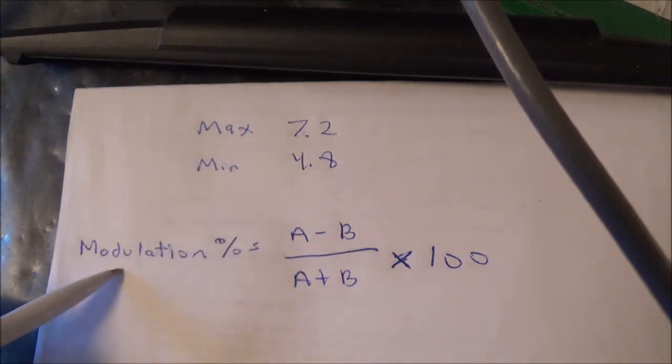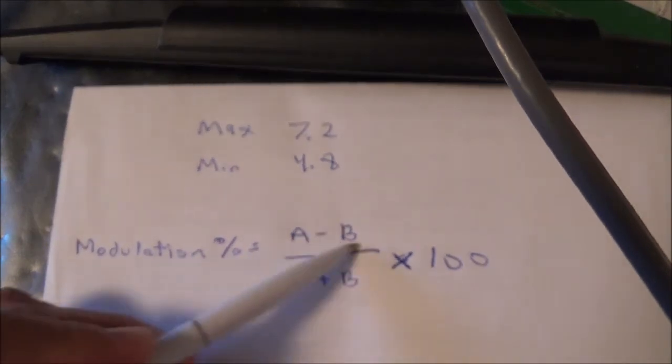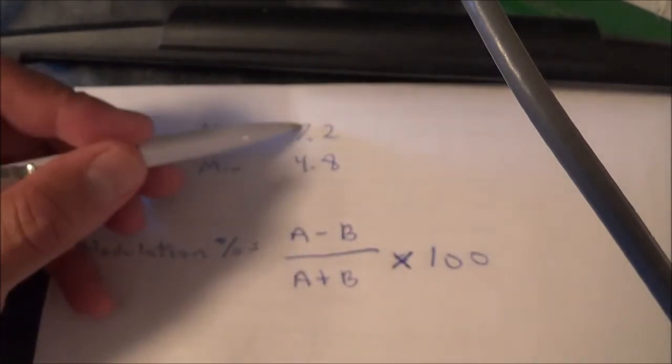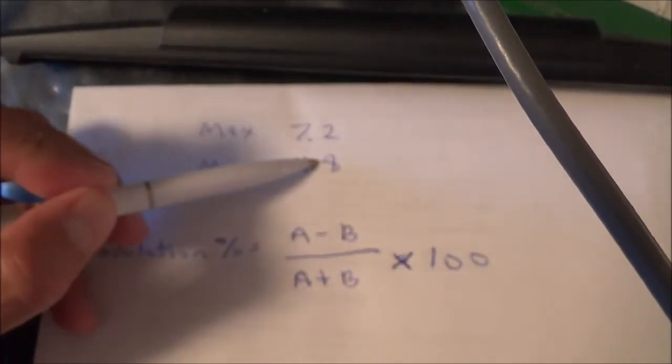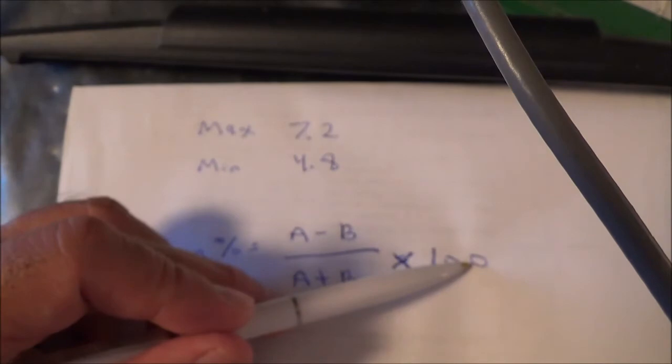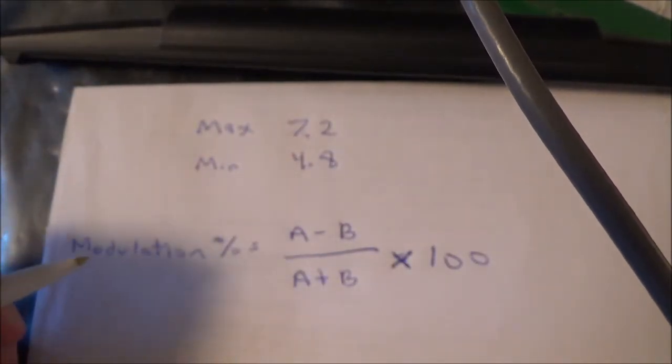And here's the formula. The modulation percentage is equal to A minus B, and A is going to be the maximum, and B is going to be the minimum. What we do is we take A minus B, we divide that by A plus B times 100, and that gives us the modulation percentage.